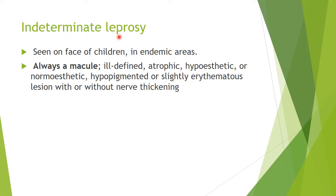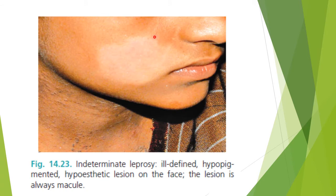Indeterminate leprosy is seen on the face of children in endemic areas. It is always a macule — ill-defined, atrophic, hypoesthetic or normoesthetic, hypopigmented or slightly erythematous lesion, with or without nerve thickening. This is an example: an ill-defined, hypopigmented, hypoesthetic macule on the face.